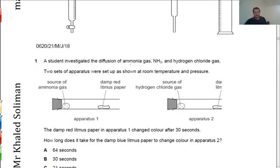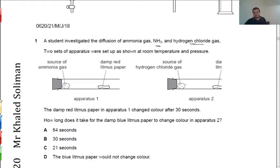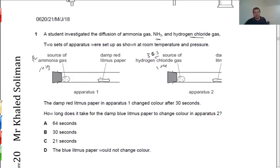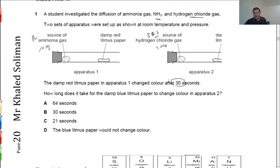A student investigates diffusion of ammonia (NH₃, molecular mass 17) and hydrogen chloride (HCl, molecular mass 36.5). Which one diffuses faster? Ammonia — because it is lighter. Ammonia takes shorter time and covers a longer distance. So if ammonia covers a certain distance in 30 seconds, hydrogen chloride will cover the same distance in more than 30 seconds. The answer is 64 seconds.